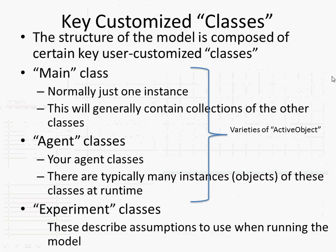These are all components, and I'll give a sense of what's meant by 'class' in a minute. Normally for main, there's just one instance of this running at a given time — one stage on which the agent is set. This is going to contain the collections of the other classes. Agents are associated with the particular agent types of interest, and typically there are many instances — many agents circulating — even though there's only one agent class.